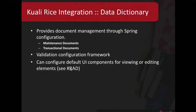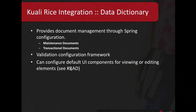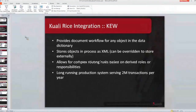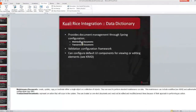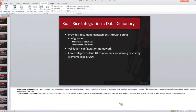The data dictionary provides document management through Spring configuration and the application of maintenance documents and transactional documents. Maintenance documents create, update, copy, or inactivate either a single object or a collection of objects — they're used to perform standard maintenance on data, and this can include workflow and authorization configuration. Transactional documents represent an action that will occur in the system. They're treated as one-shot documents that need not be edited multiple times — it's really just an atomic action in the system. You fire it off and it does its action and then it's done.